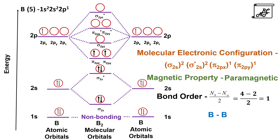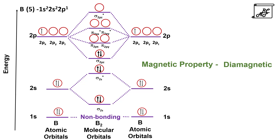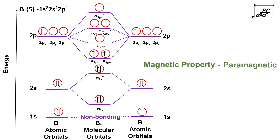There would have been a question in your mind as to why we are not considering the diagram without mixing. If we were to consider that diagram, we would see that the 2 electrons would get paired up in the sigma 2pz orbital and boron would become diamagnetic. But experimental studies have proved that the boron molecule is paramagnetic, meaning we must consider the diagram with mixing, where there are two unpaired electrons in pi 2px and pi 2py orbitals.